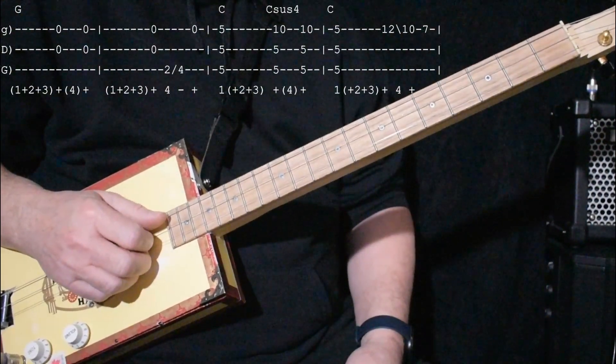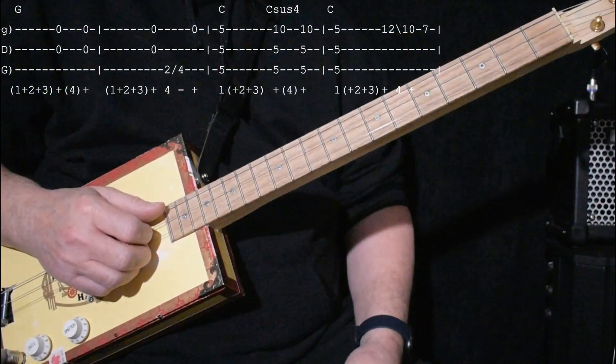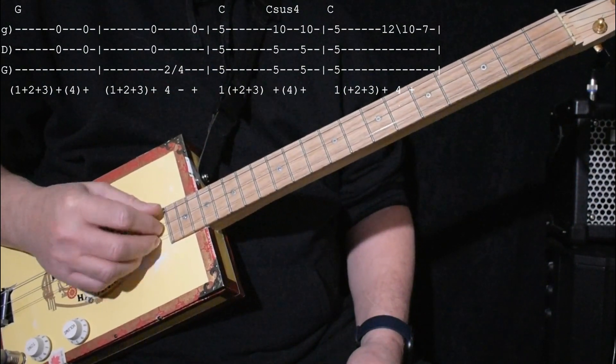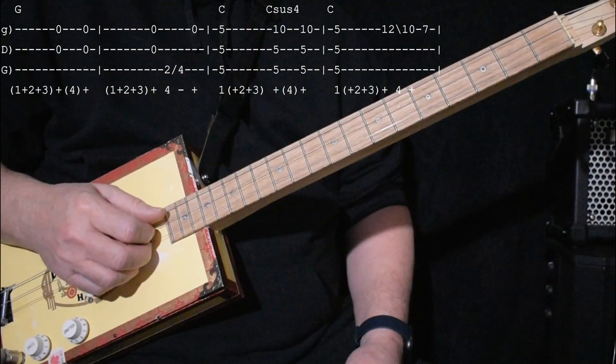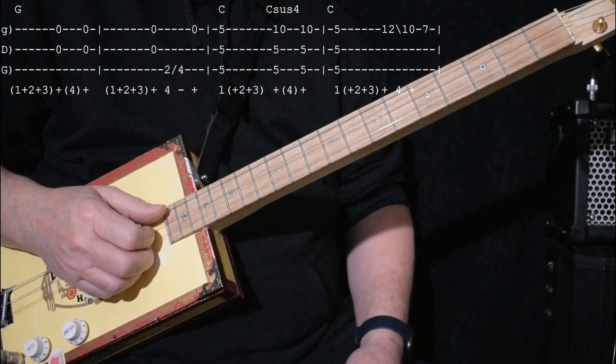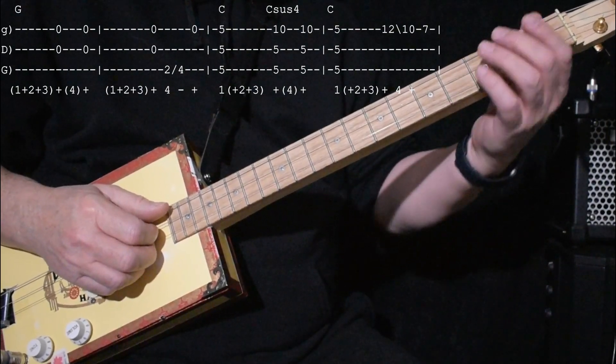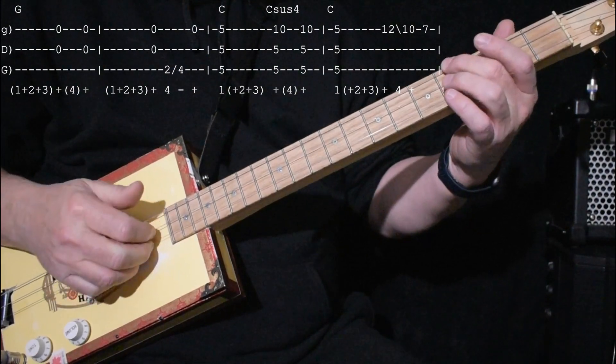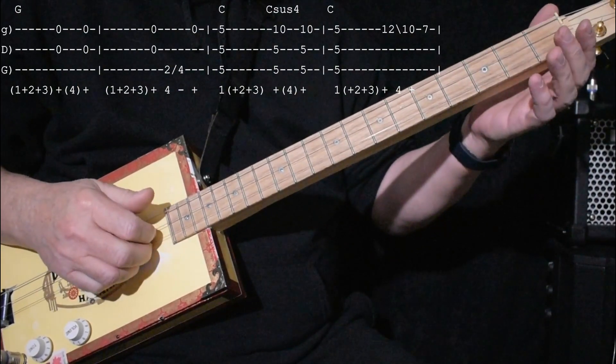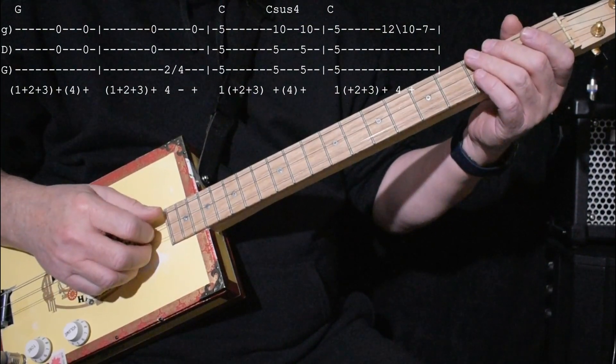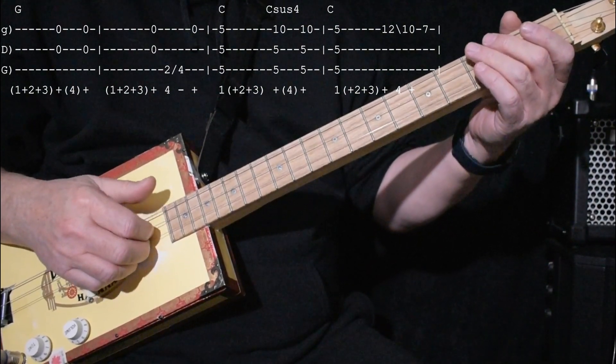All right, now we're into the song, and the singing starts, and the guitar part is actually pretty laid back. It continues with these two notes, and it does them on the and of 3 and the and of 4. And then it does it on the and of 3, and then adds a 2 slide to 4, and an open high string. So that's on the and of 3, so it's like 1, 2, 3, and 4.